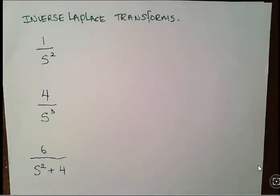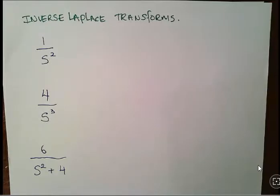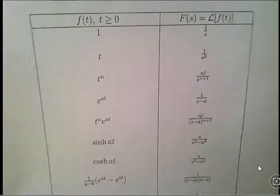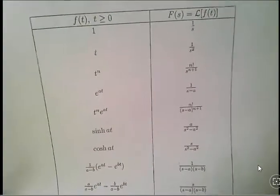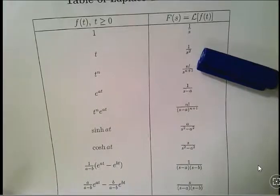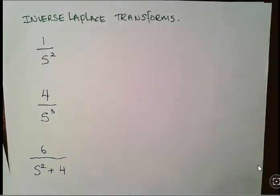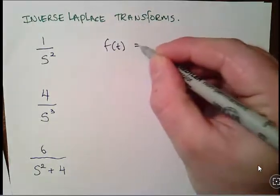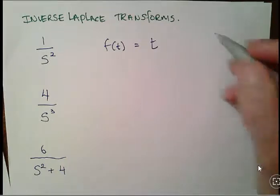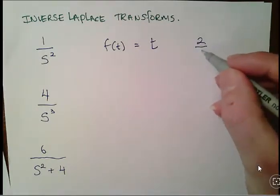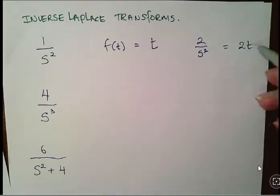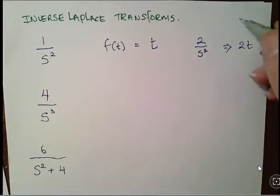In this presentation we are going to use the Laplace transform tables to compute some inverse Laplace transforms. I have a few here to start off with and I'll add more as I go. I'm going to hold the table up to the camera — for example, the second entry: the inverse Laplace transform of 1 over s squared is t. So f(t) = t. Similarly, the inverse Laplace transform of 2 over s squared is 2t.